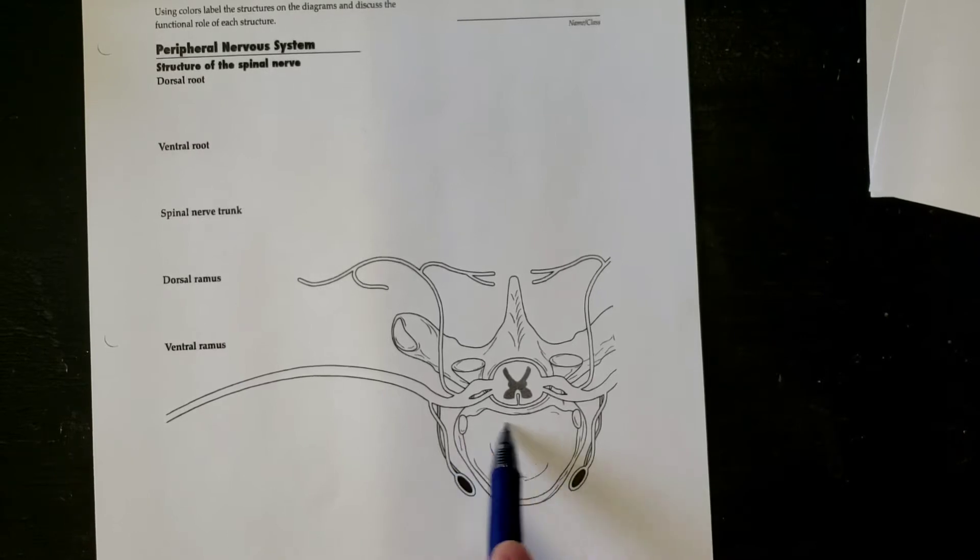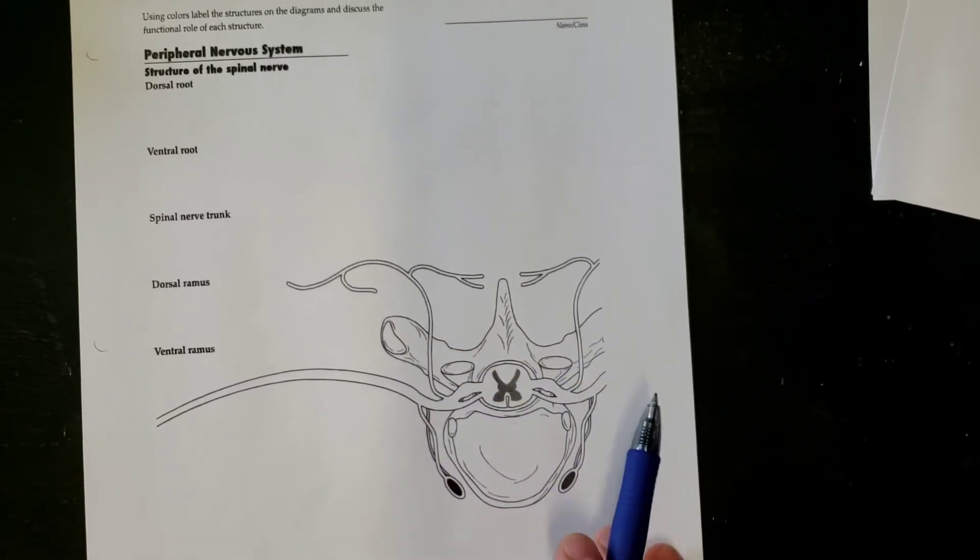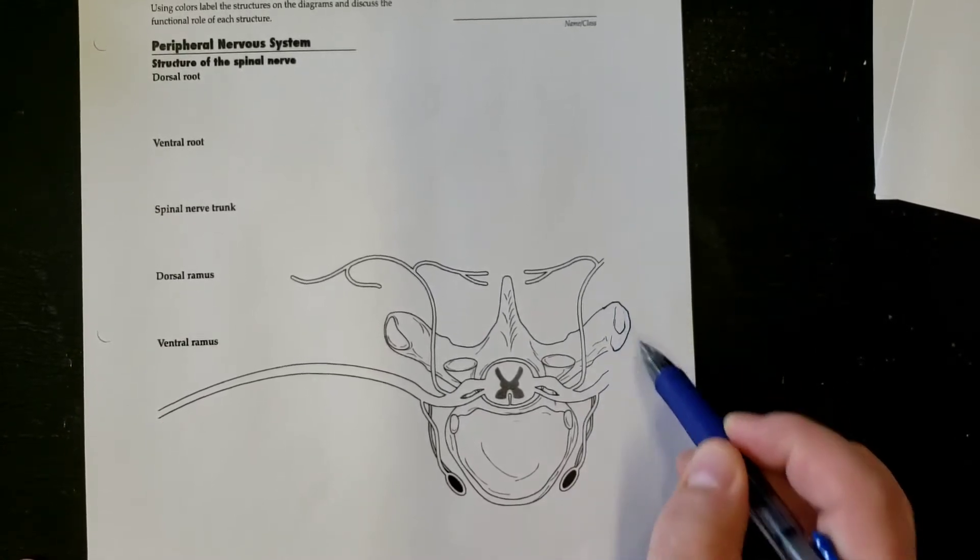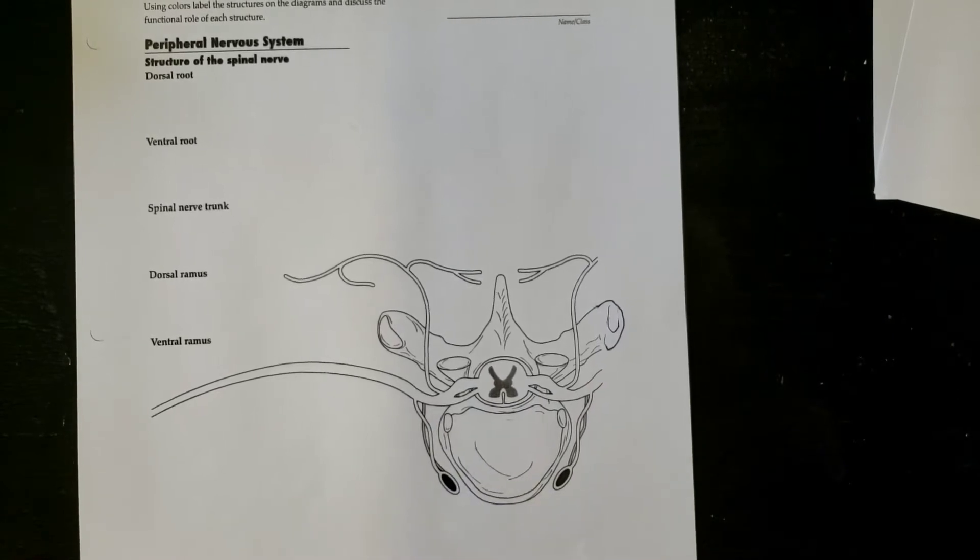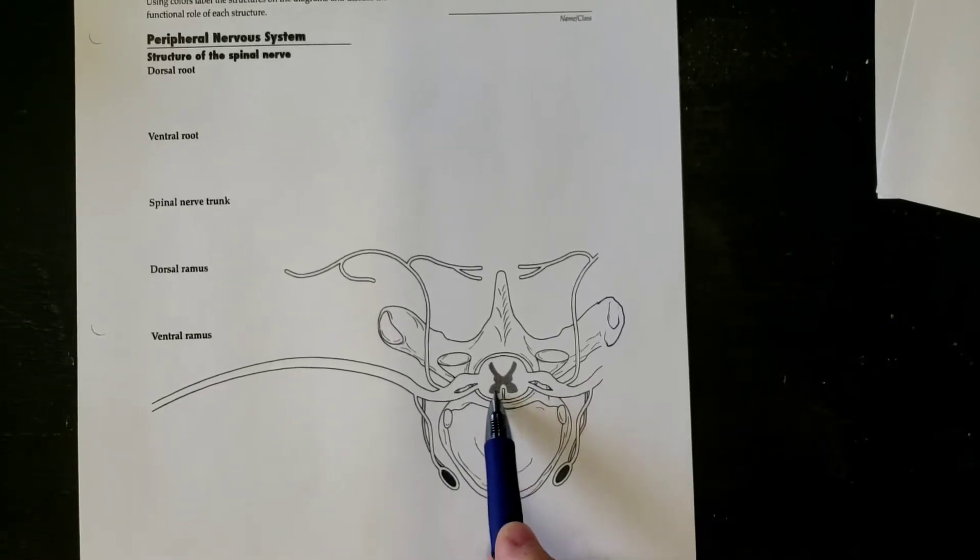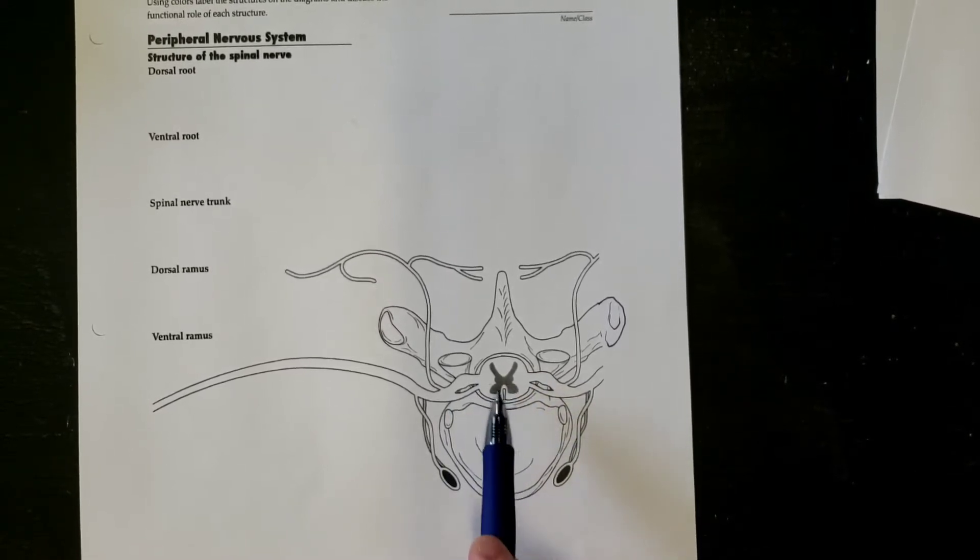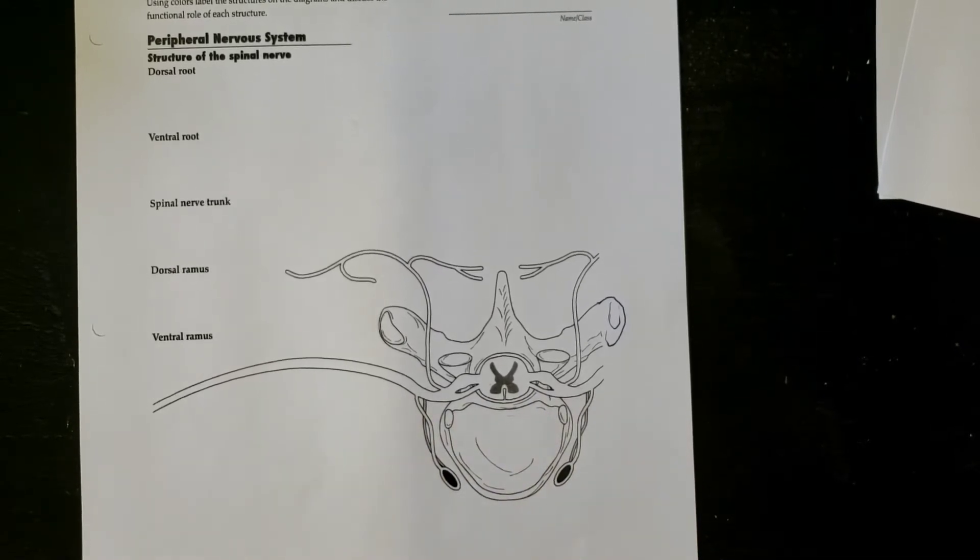You can see you have your transverse processes over here. There's this one's missing, I don't know why. And then you have your facets, all the stuff that we talked about in anatomy one. But now we're adding the actual spinal cord with the nerves coming off.